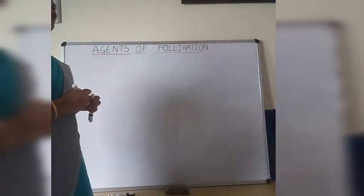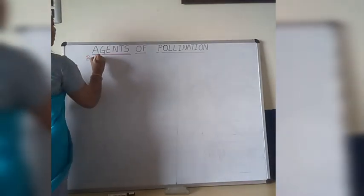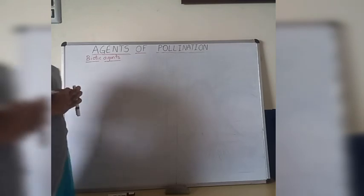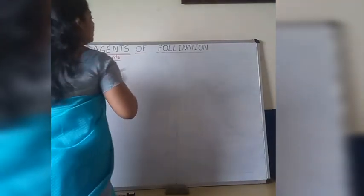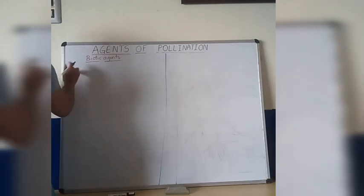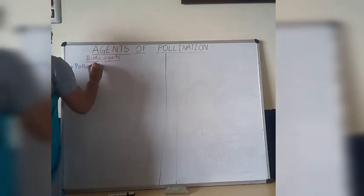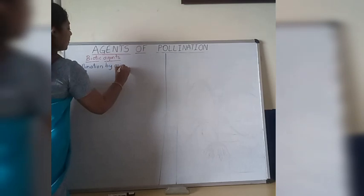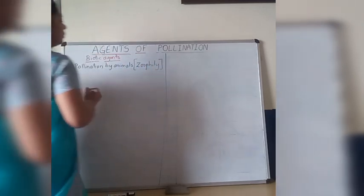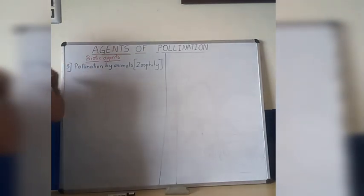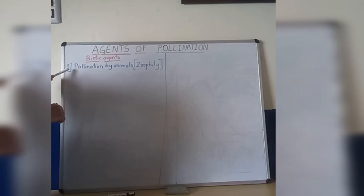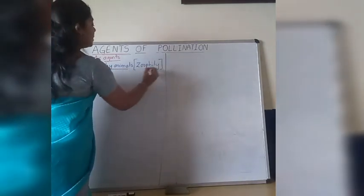Moving on to the next type of pollinating agent: the biotic agents. Biotic agents means living components are involved in pollination. Pollination by animals is called zoophily. This is the third type — first was wind pollination, second was water pollination, and third, among biotic agents, is pollination by animals, which we call zoophily.